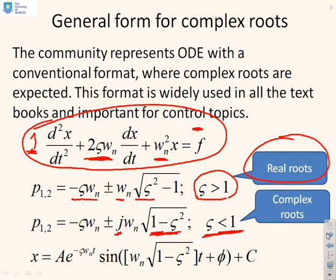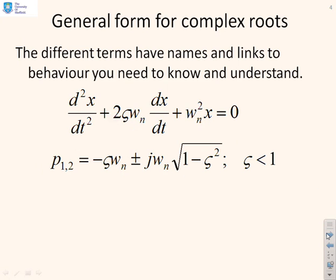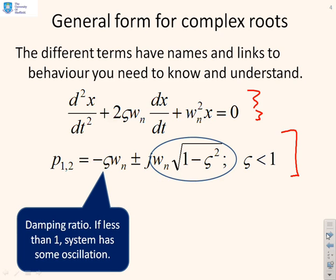If you have complex roots, the solution has an exponential with the real part -ζωₙ so ζ impacts the decay rate, and the frequency of oscillation is ωₙ√(1-ζ²). ζ is often called damping ratio - if it's less than one the system has some oscillation, if it's bigger than one you've got real roots.